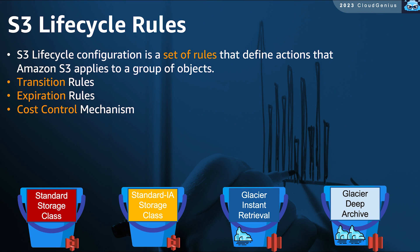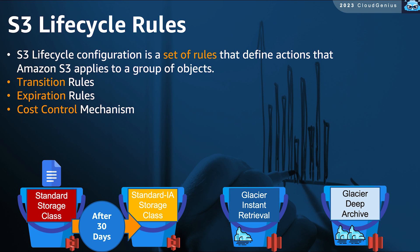The final topic to conclude this lesson is S3 Lifecycle Rules and Policies. S3 Lifecycle Configuration allows you to define time-based policies either to transition your objects from a storage class to another cheaper storage class, or even set expiration policies for when to delete your objects. For example, you upload a new object expected to be frequently accessed, so you use the Standard storage class. You can then set a rule that after 30 days, when the object cools down a little, move it to Standard IA.